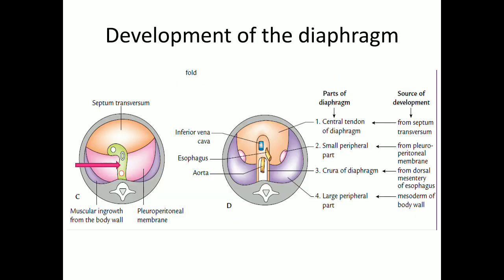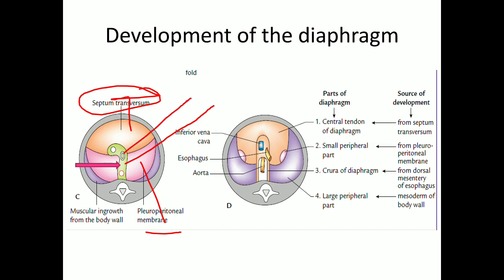The four components responsible for development of the diaphragm are: first, the septum transversum; second, the pleuroperitoneal membrane, shown as the pinkish structure; third, the dorsal mesentery of the esophagus — this is the esophageal opening, anterior to it is the vena caval opening, and posterior to it is the aortic opening, so behind the esophageal opening this part is the dorsal mesentery of the esophagus; and fourth, muscular ingrowth from the body wall, or the mesoderm of the body wall.